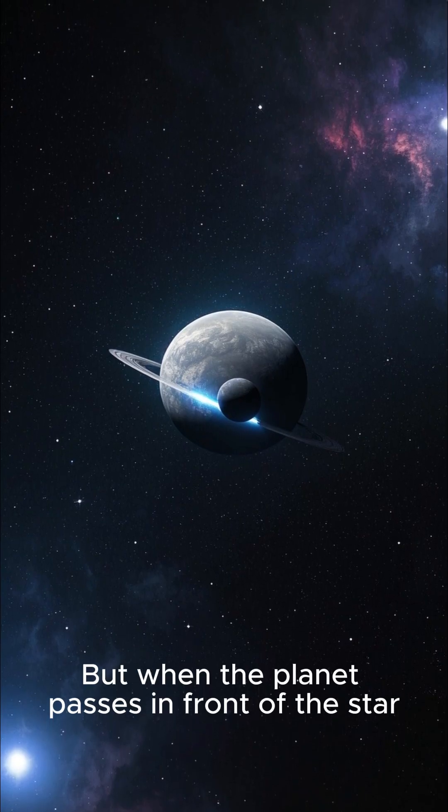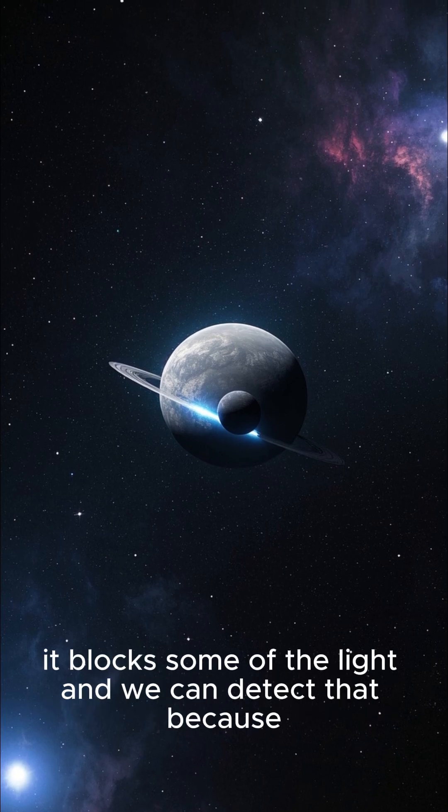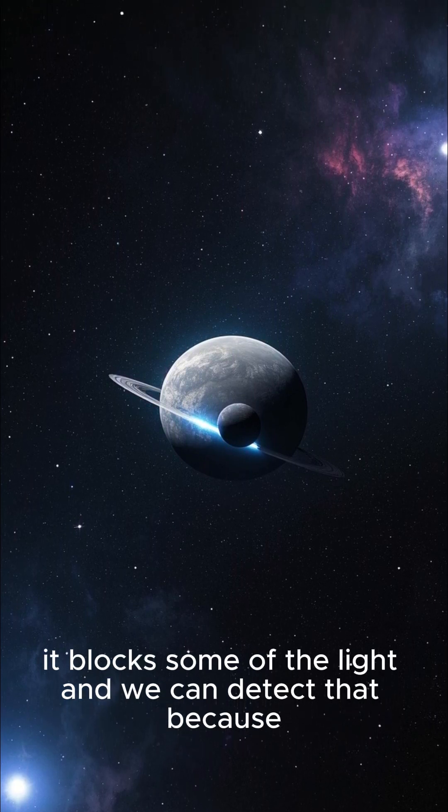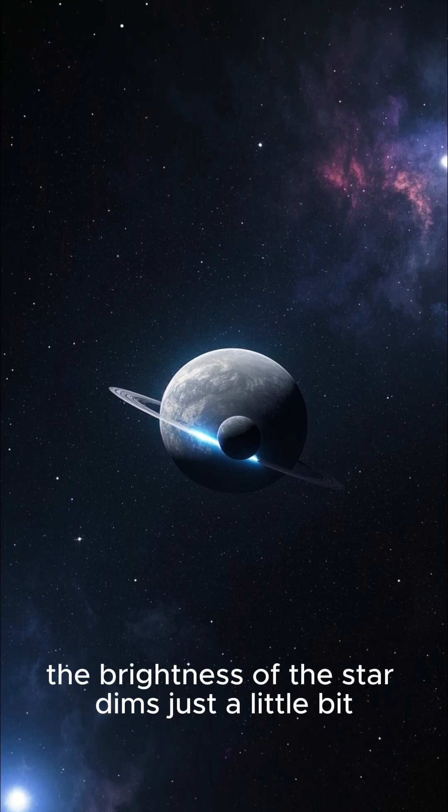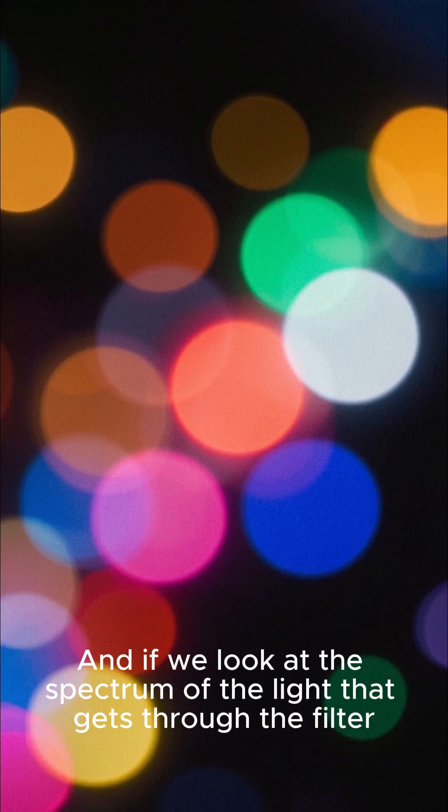But when the planet passes in front of the star, it blocks some of the light. And we can detect that because the brightness of the star dims, just a little bit.